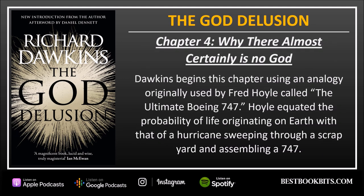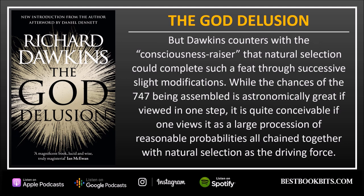Chapter 4: Why There Almost Certainly Is No God. Dawkins begins using an analogy originally used by Fred Hoyle called the Ultimate Boeing 747. Hoyle equated the probability of life originating on Earth with that of a hurricane sweeping through a scrapyard and assembling a 747. But Dawkins counters that natural selection could complete such a feat through successive slight modifications. While the chances of the 747 being assembled are astronomically large if viewed in one step, it is quite conceivable when viewed as a large procession of reasonable probabilities chained together with natural selection as the driving force.